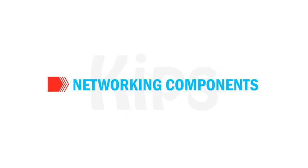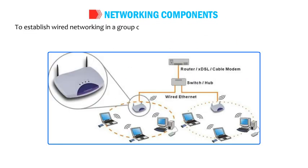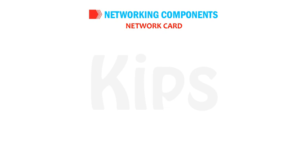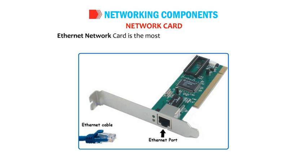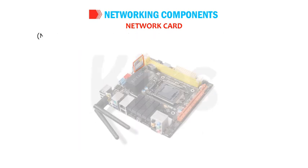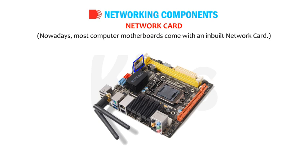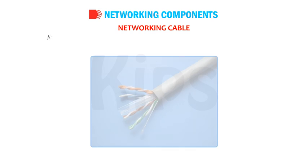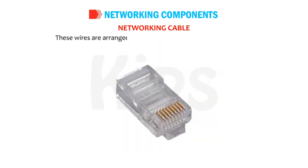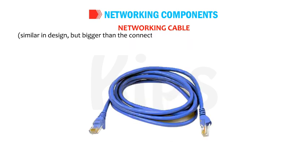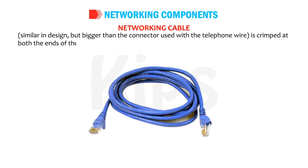Let's talk about networking components. To establish wired networking in a group of computers, we require additional components. Network card — a network card is used to physically attach a computer to a network so that it can participate in network communication. Ethernet network card is the most commonly used network card; nowadays, most computer motherboards come with an inbuilt network card. Networking cable — modern Ethernet networks use twisted pair cable containing 8 wires, arranged in a special order, with an RJ45 connector crimped at both ends of the cable.